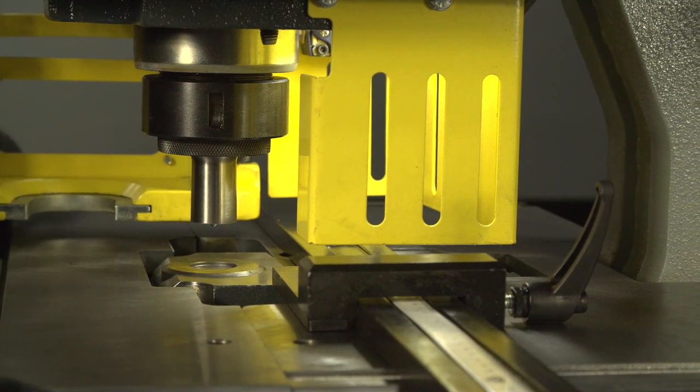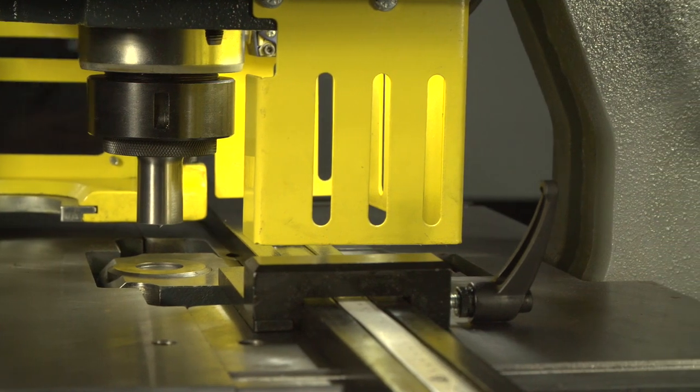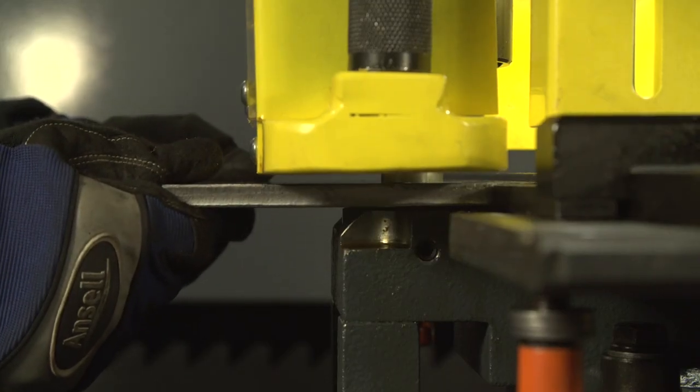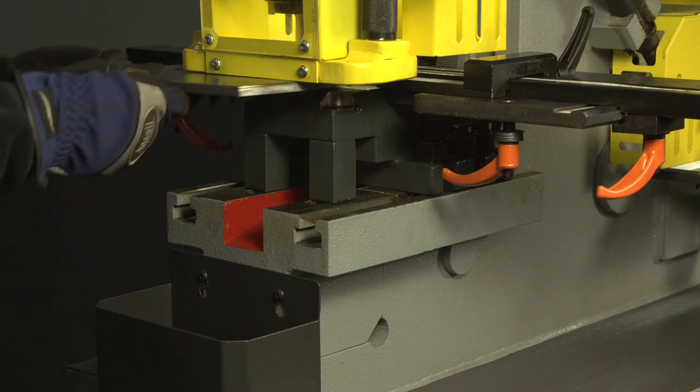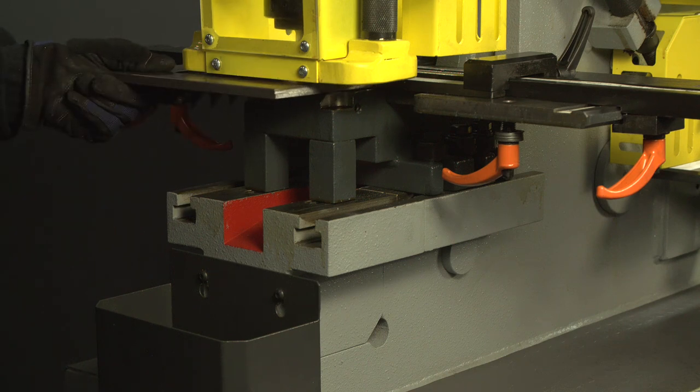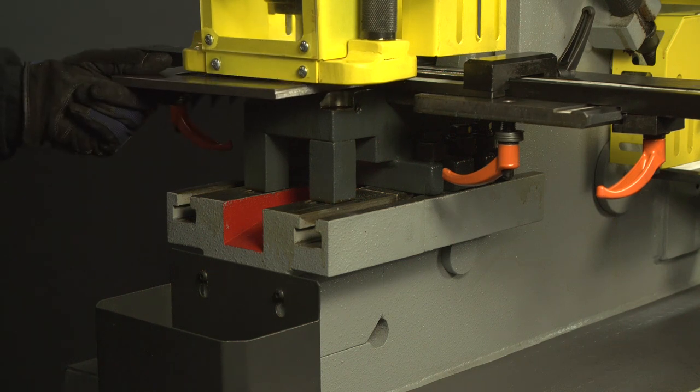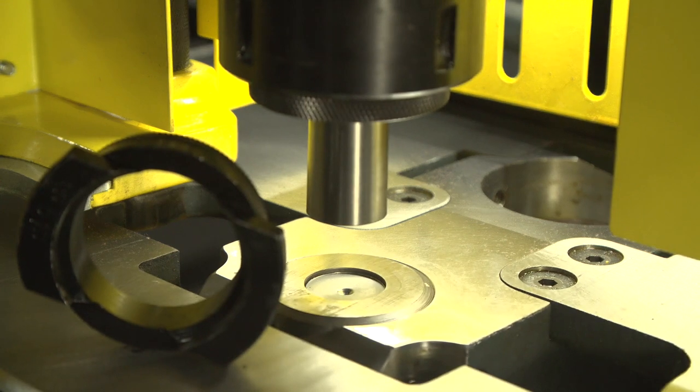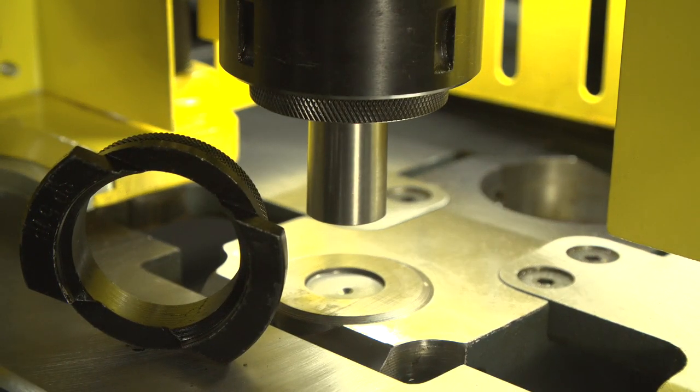Marvel proudly uses Cleveland Punch and Die series 26 punches and series 62 dies for punching up to 1 and 9 sixteenths of an inch. For punching up to the two-inch capacity, Marvel uses Cleveland Punch and Die series SP51P and SP80D.